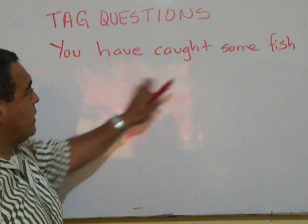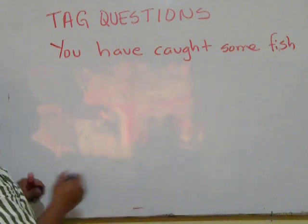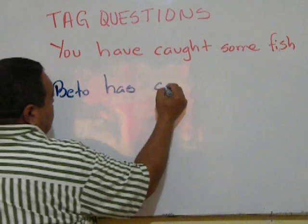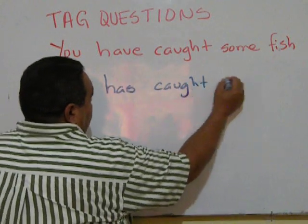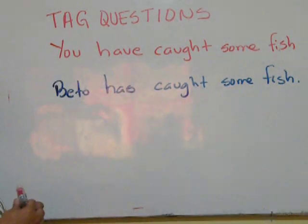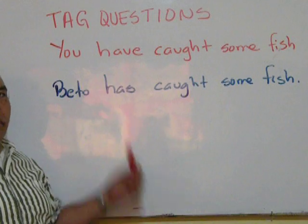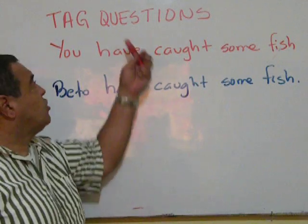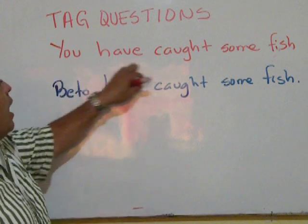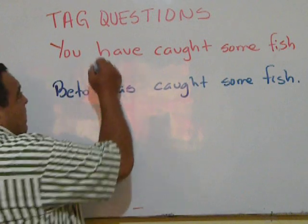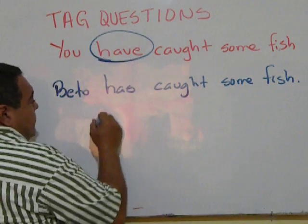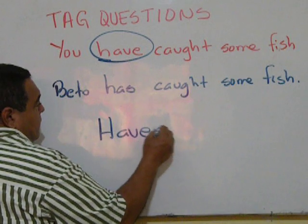Let's put another example with the same context. Beto has caught some fish. So both of them are referring to past statements. So both tag questions have to go in negative expression. You have caught some fish.